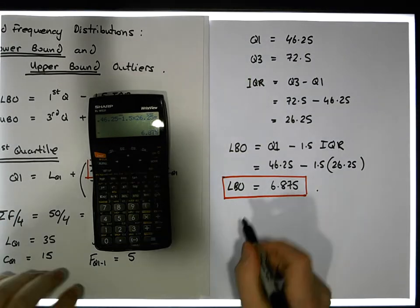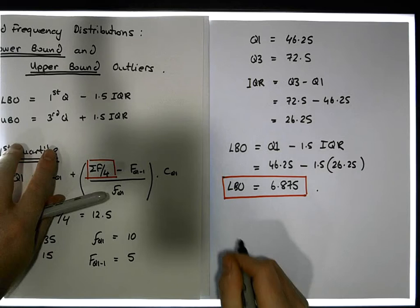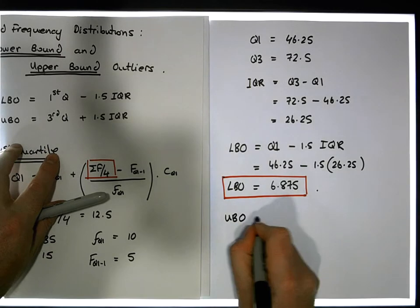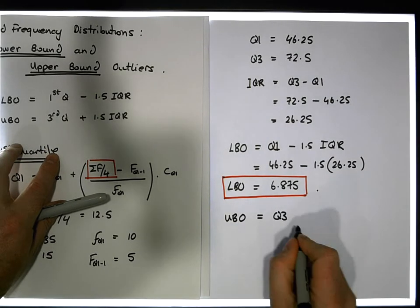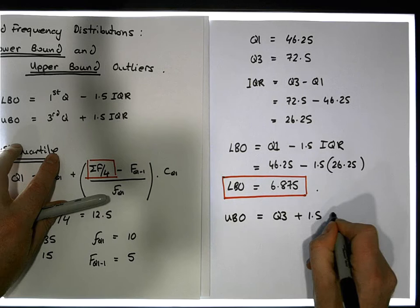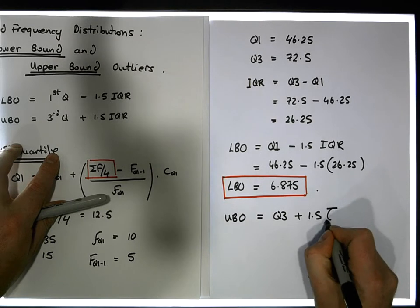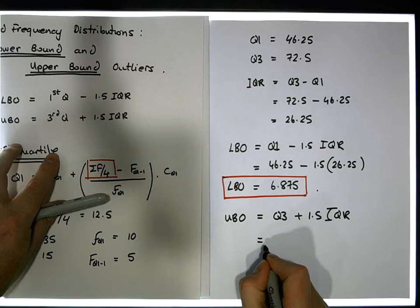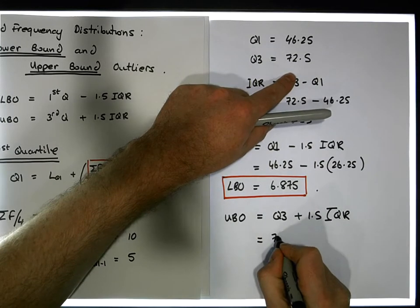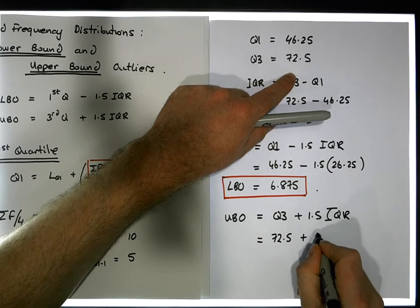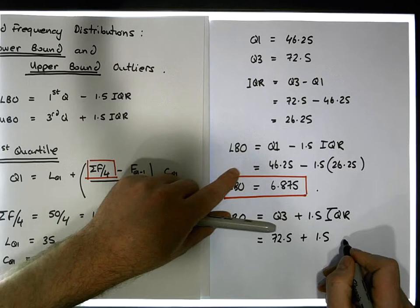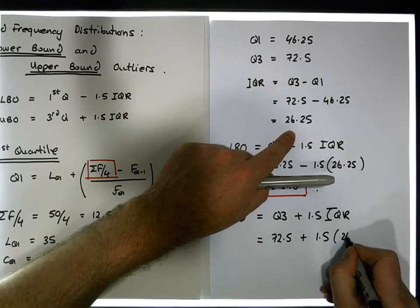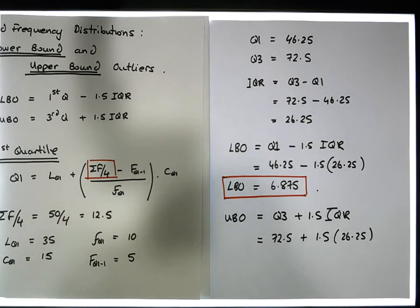What about the upper bound outliers? Well, the formula is the upper bound outliers are equal to Q3, the third quartile, plus 1.5 times the interquartile range. So what's that give us? That gives us Q3 is 72.5 plus 1.5 times our interquartile range, which is 26.25.